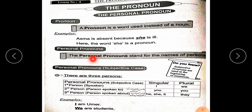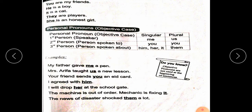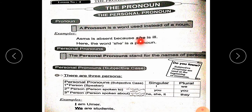Personal pronouns stand for the names of persons. Personal pronouns have two cases: subjective case and objective case. First we should read the subjective case. Subjective pronouns are used at the beginning of the sentence.